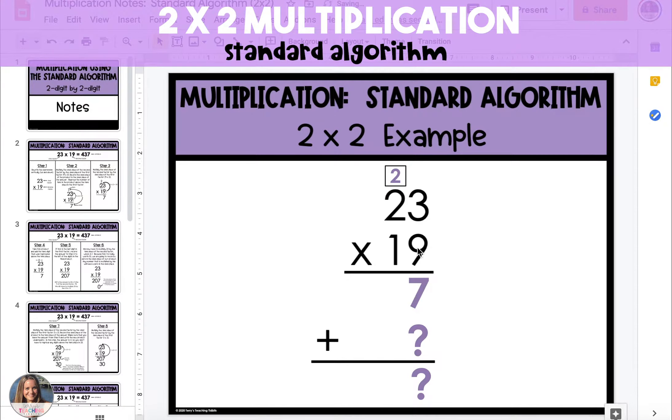Next, we multiply 9 by the two tens in 23, which is 18, but we still have the two tens that we regrouped, so we're going to take our 18 tens and our two tens, and we now have 20 tens.